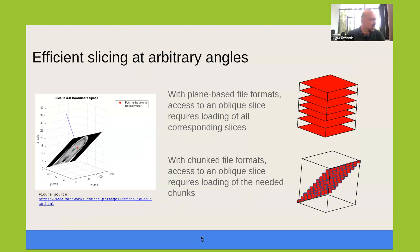Here's an example of how chunking helps with better access performance. If you have a 3D image and want to access an oblique slice, you normally need only single lines of pixels at each X-Y plane. But since it is not possible to access subsets of pixels in the X-Y planes of TIFF, you need to read the entire plane. With chunked formats such as OME-Zarr, it is possible to read only the chunks that correspond to those single lines of pixels — significantly reducing the amount of data read.